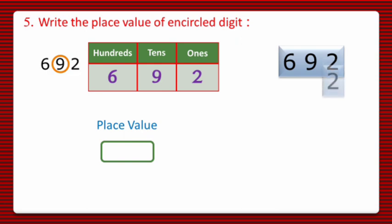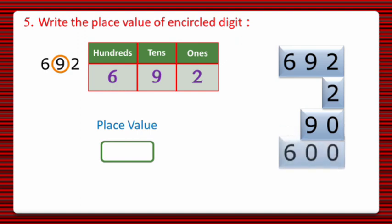In 692, two ones are there, nine tens, that is 90, and six hundreds are there, that is 600. So it's clear that the place value of 9 is 90. So we will write down 90.